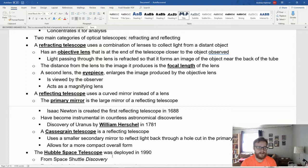A reflecting telescope uses a curved mirror instead of a lens. The primary mirror is the large mirror of a reflecting telescope. Isaac Newton is known for creating the first reflecting telescope in 1688, which would become instrumental in almost every astronomical discovery using visible light. An example is the discovery of Uranus by William Herschel in 1781.